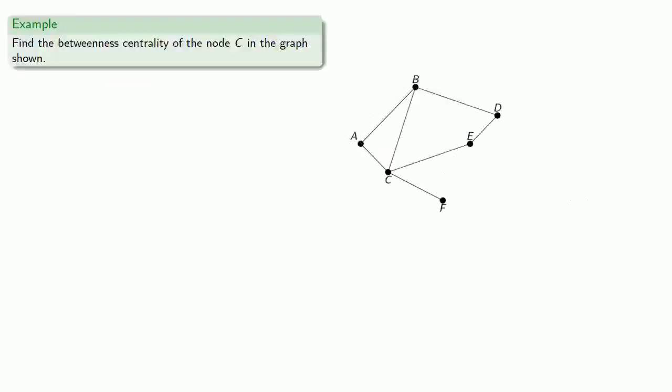Now, like many things, betweenness centrality is easy to describe. It does take a bit more work to implement. So let's find the betweenness centrality of node C in the graph. The idea behind betweenness centrality is: if we want a message to go from one node to another, how many of those messages have to pass through C? And for that, we note that there are ten possible pairs to connect.